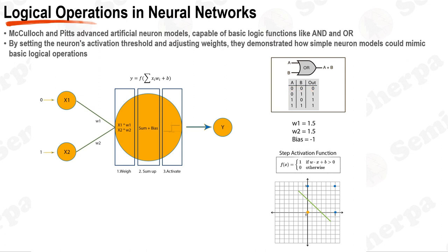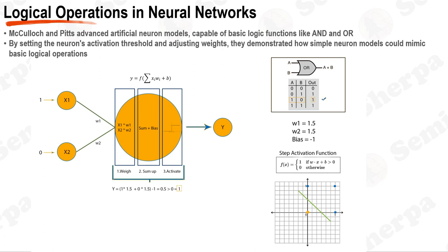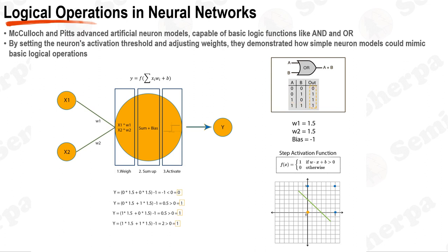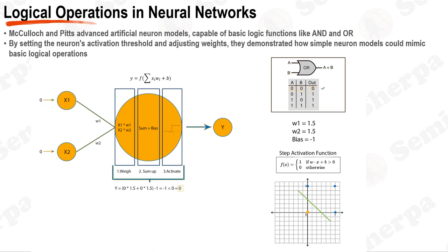An illustration of OR logic, for example, is when a neuron fires an output if either of its inputs is active, embodying the binary OR operation. This can be achieved by setting the neuron's activation threshold to 0 and assigning each input, X and Y, a weight of 1.5, indicating their influence. Hence, the neuron would activate if either X or Y were 1, as the cumulative weighted input would exceed the threshold, causing the neuron to fire an output. In essence, McCulloch and Pitts' work was key in showing how even simple models of biological neurons could mimic basic logical operations, laying the groundwork for modern artificial neural networks.